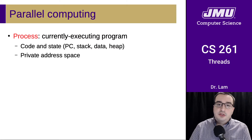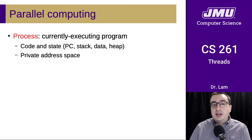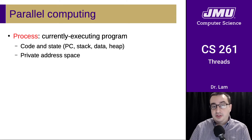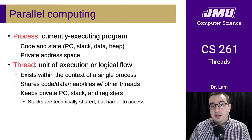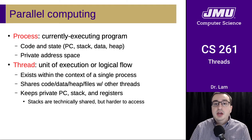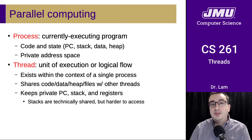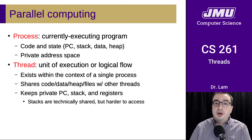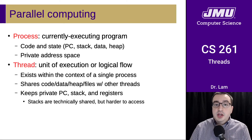We have already introduced the concept of a process, which is an executing program. It has code and stack state — the program counter, stack, data, and heap — and every process has its own private address space. What we're introducing today is the concept of a thread, which is a unit of execution or logical flow similar to a process. It's an abstraction provided by the operating system and runtime libraries, but multiple threads can exist within a single process and, unlike processes, can share the same address space — the same code, data, heap, and potentially the same files.